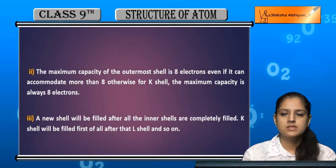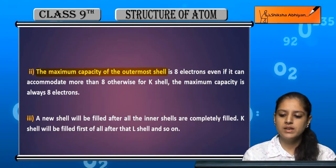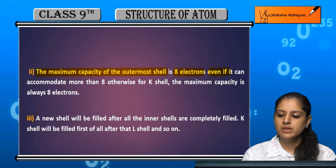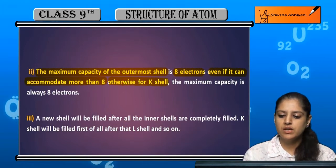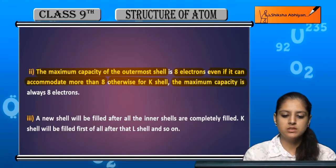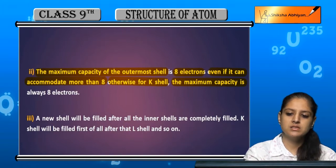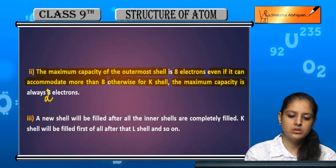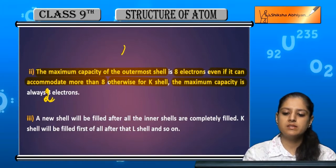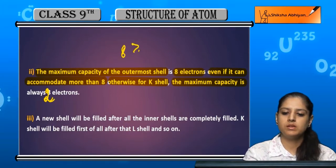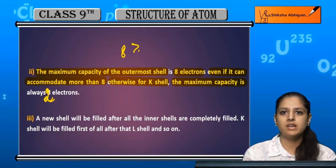The second rule is that the maximum capacity of the outermost shell is 8 electrons, even if it can theoretically accommodate more. For the K shell the maximum is always 2 electrons, but for other shells, even if they can hold more than 8, when acting as the outermost shell the maximum capacity is 8 only.